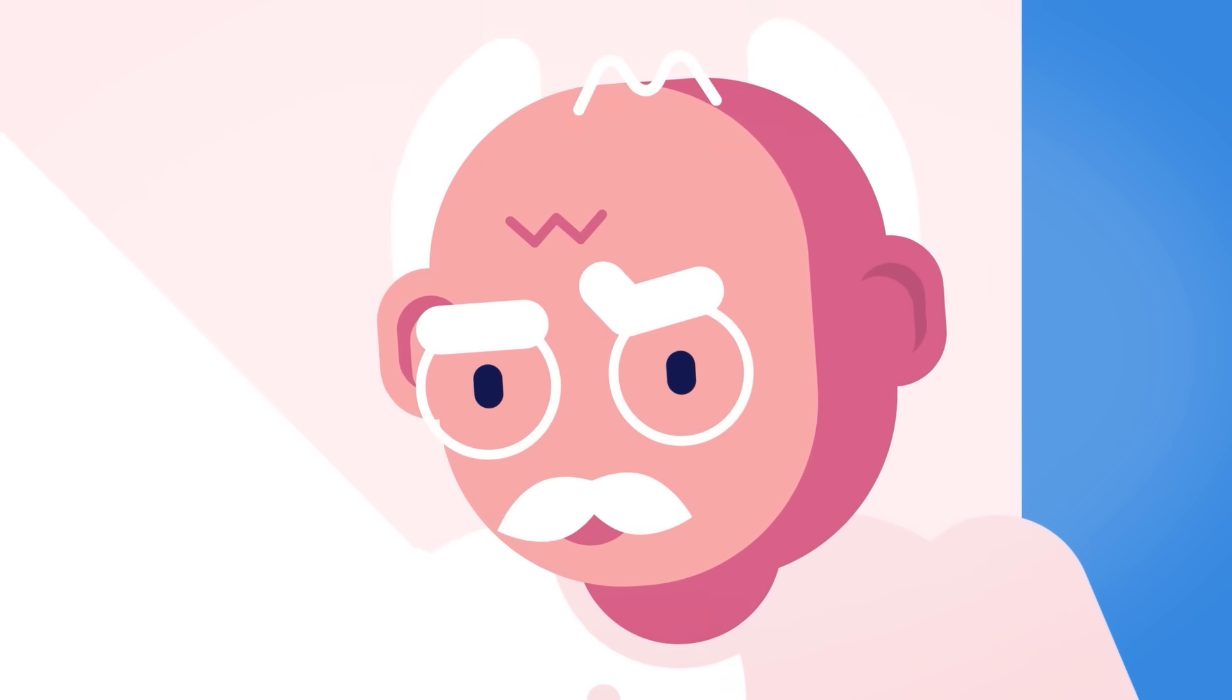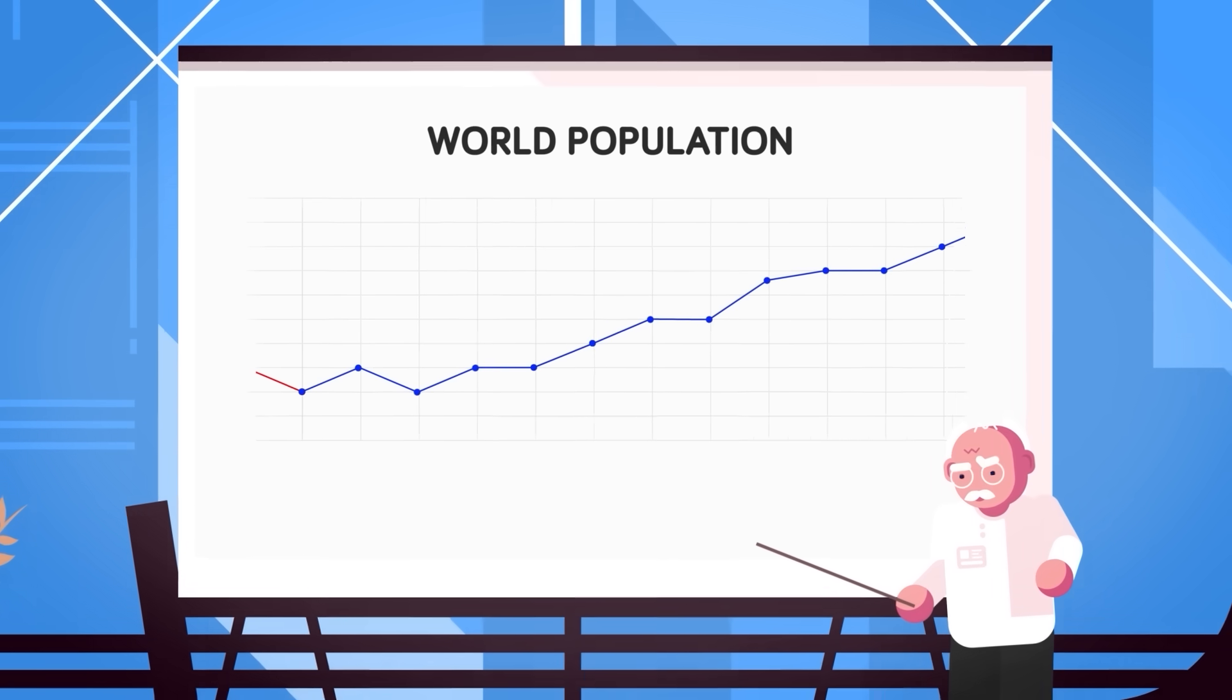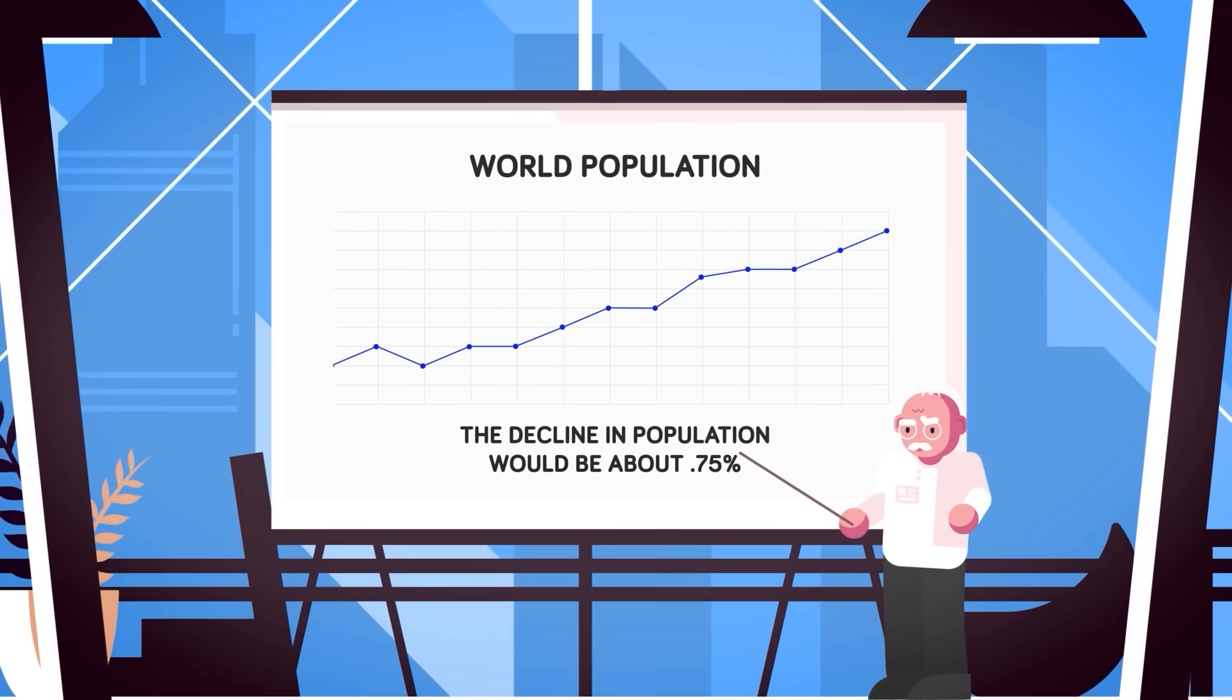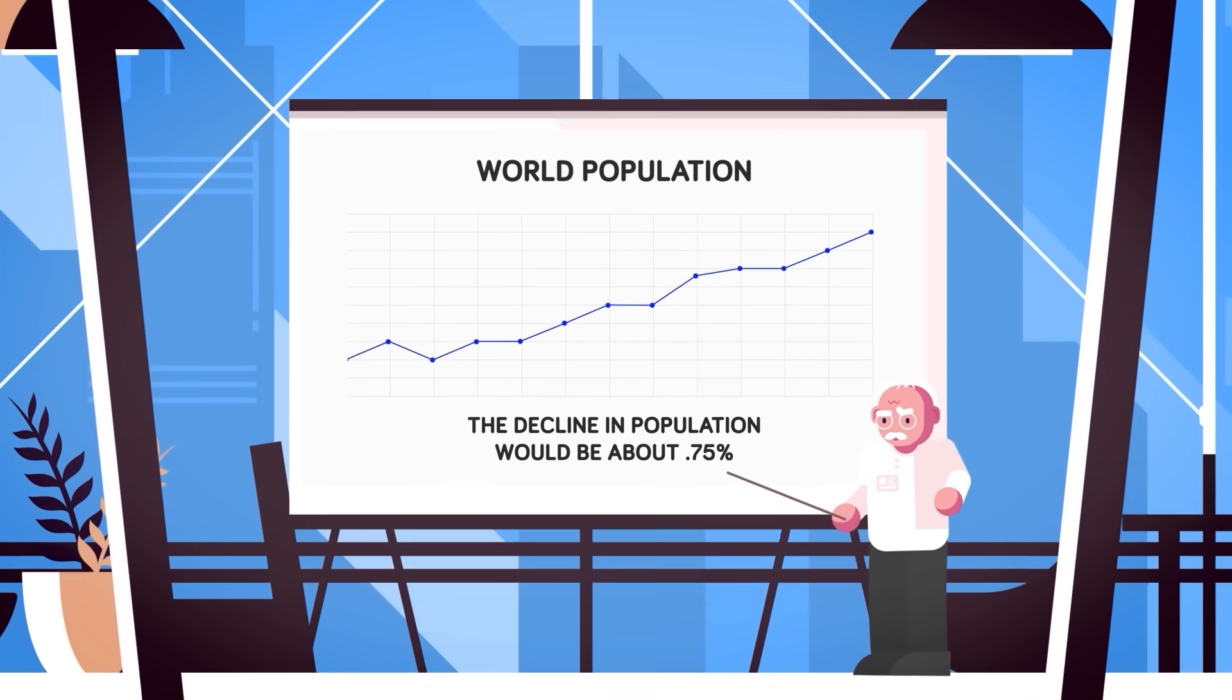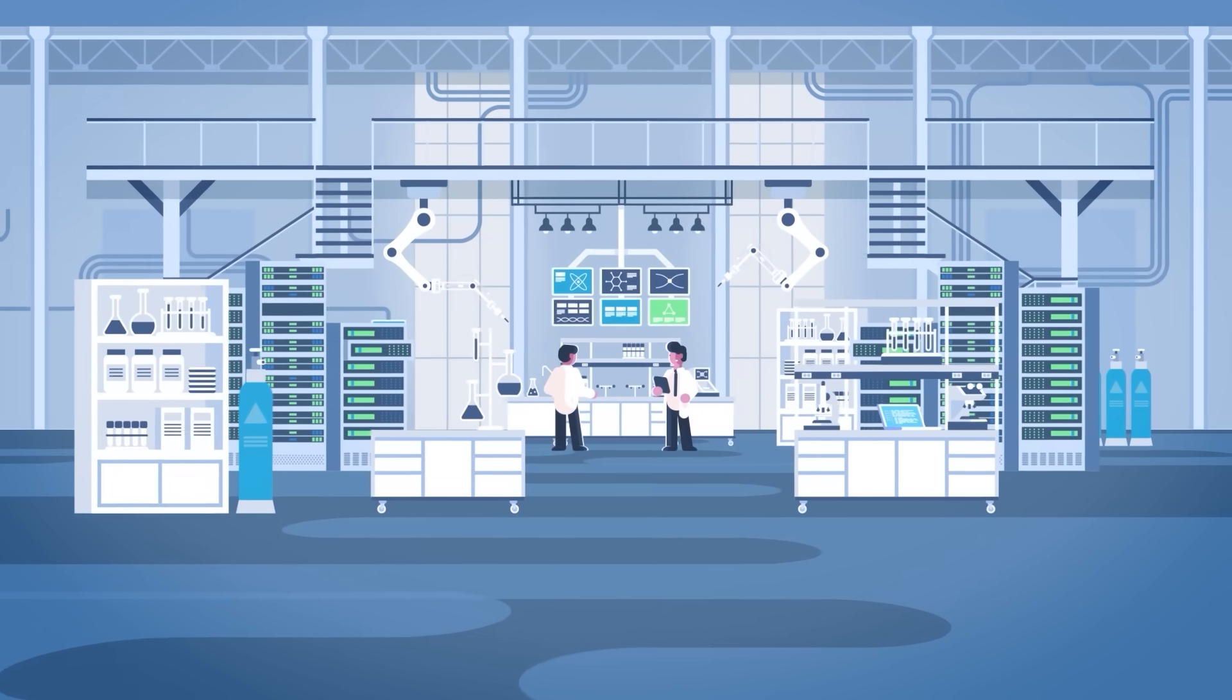Economies would almost certainly go into decline until it became clear that the time period of no babies being born was just a fluke and things would return to normal the following year. The decline in population from a single year of no babies would be about 0.75 percent, so it would be a relatively insignificant dip in the grand scheme of things.